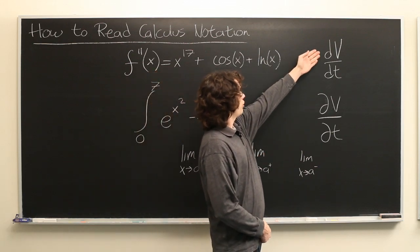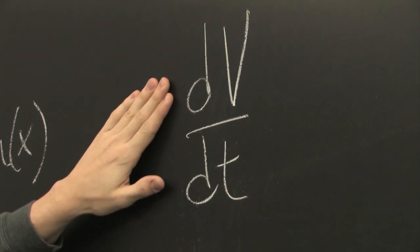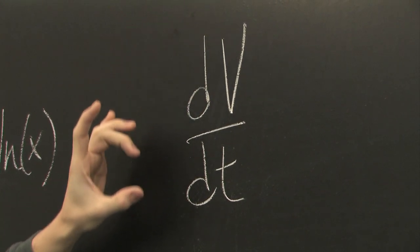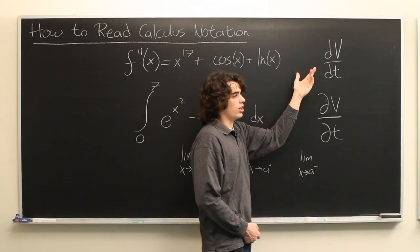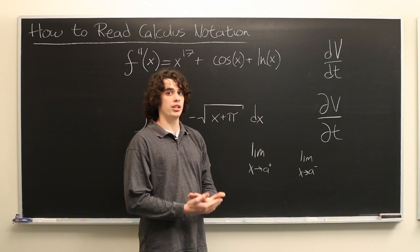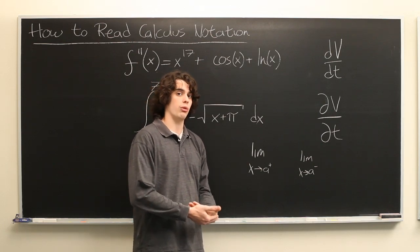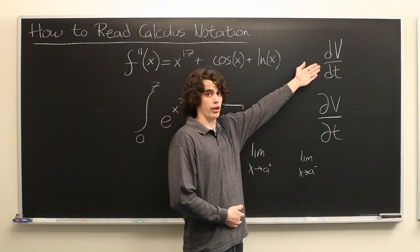Lastly, let's look at these two pieces of shorthand. Here we have dv dt, which means the derivative of v with respect to t. So, if you have some function v, which is a function of a variable t, the instantaneous rate of change of that function with respect to t is given by this piece of abbreviation, dv dt.